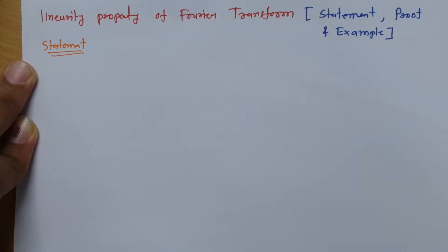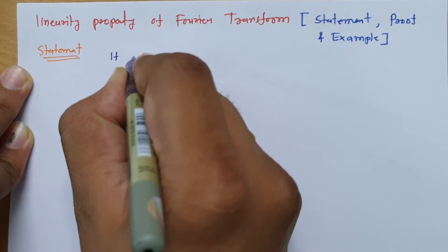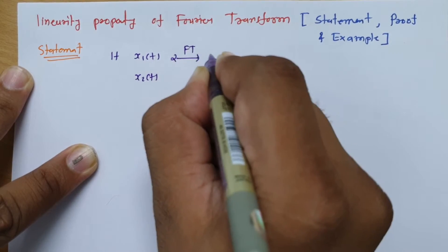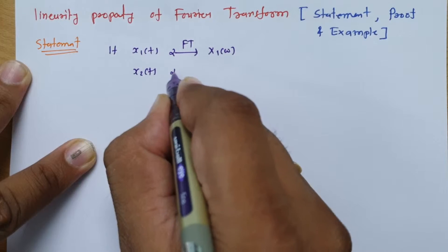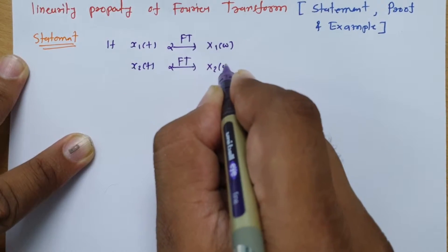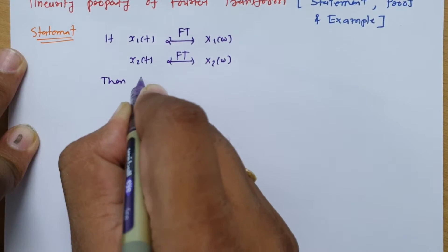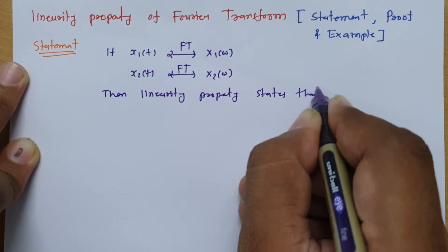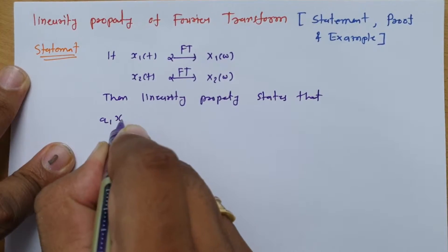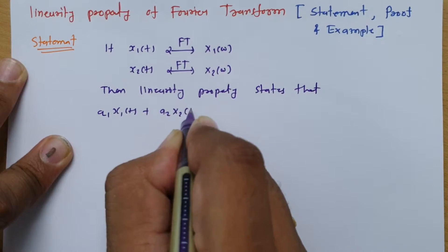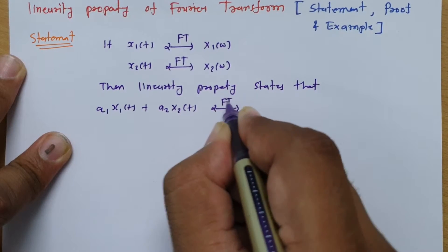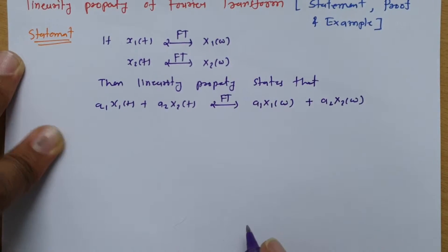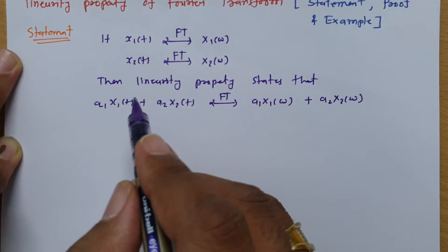The linearity property states: if you have two signals x1(t) and x2(t), where the Fourier transform of x1(t) is X1(ω) and the Fourier transform of x2(t) is X2(ω), then the Fourier transform of a1·x1(t) + a2·x2(t) is a1·X1(ω) + a2·X2(ω).